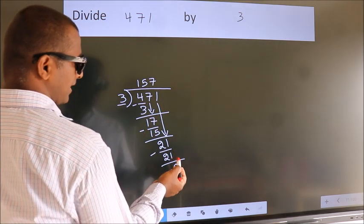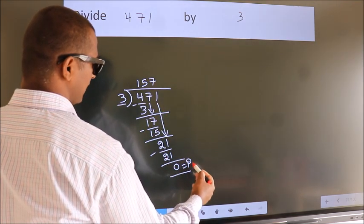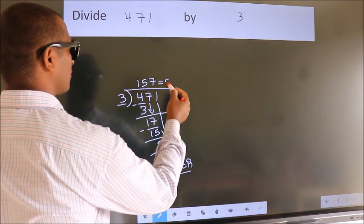No more numbers to bring it down. So, we stop here. This is our remainder. This is our quotient.